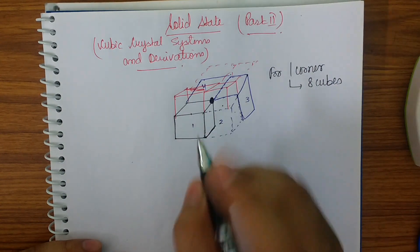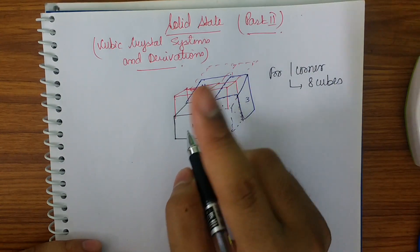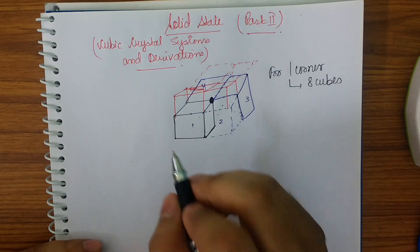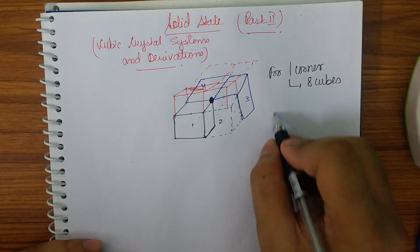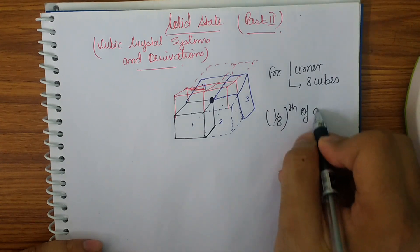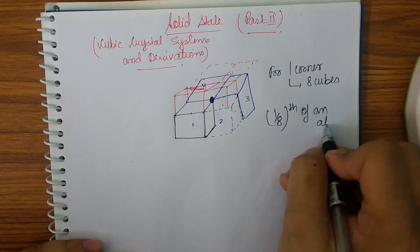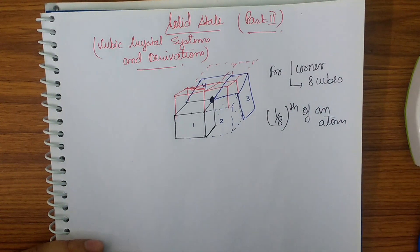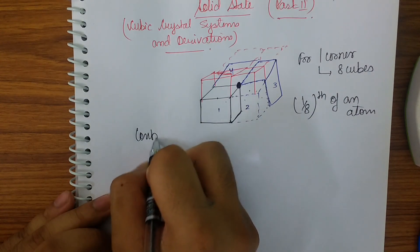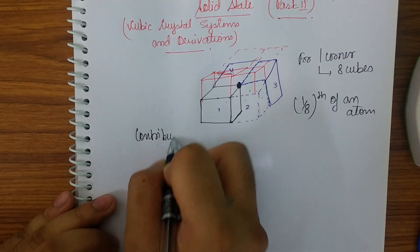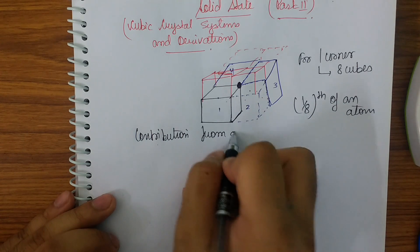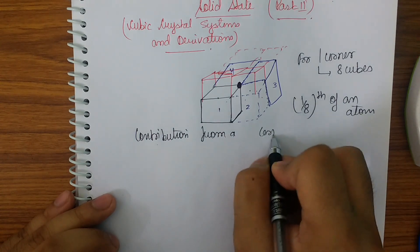So for one corner, I get 8 cubes sharing it. It means I have one atom here, and in each cell, how many atoms will I be getting? 1/8 of an atom. So the contribution from a corner is 1/8.